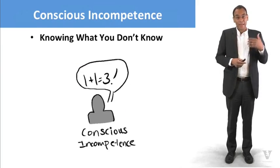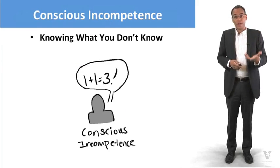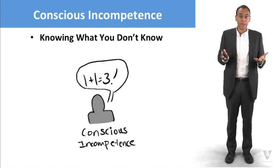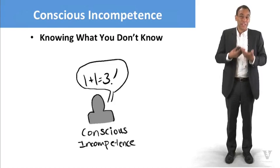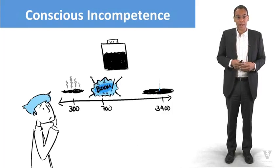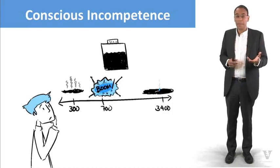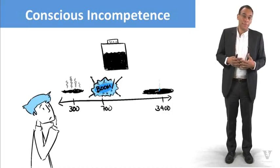And so again we have this problem where we don't know what we don't know. Next, we're going to talk about conscious incompetence. That's when we know something but we don't know what to do about it. We're still incompetent. We know that we don't know it but we're not really sure how to do it. And so in the A12 development, for example, they had to develop a new kind of fuel.